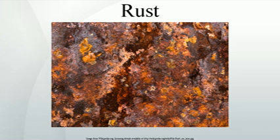Rusting is the common term for corrosion of iron and its alloys, such as steel. Many other metals undergo equivalent corrosion, but the resulting oxides are not commonly called rust. Other forms of rust exist, like the result of reactions between iron and chloride in an environment deprived of oxygen, which generates green rust.